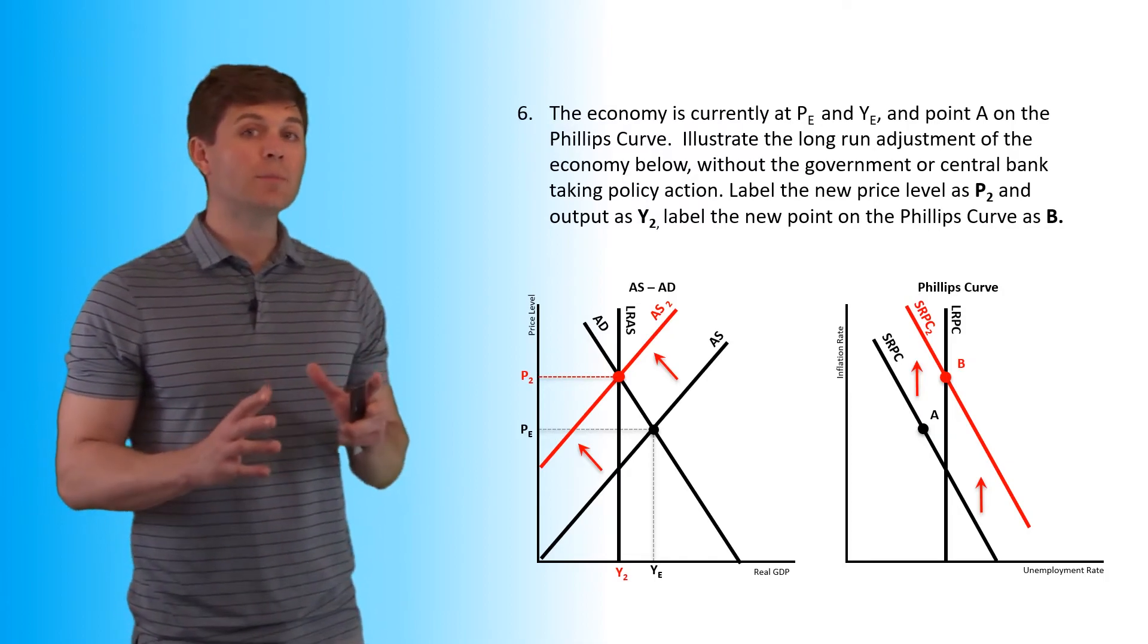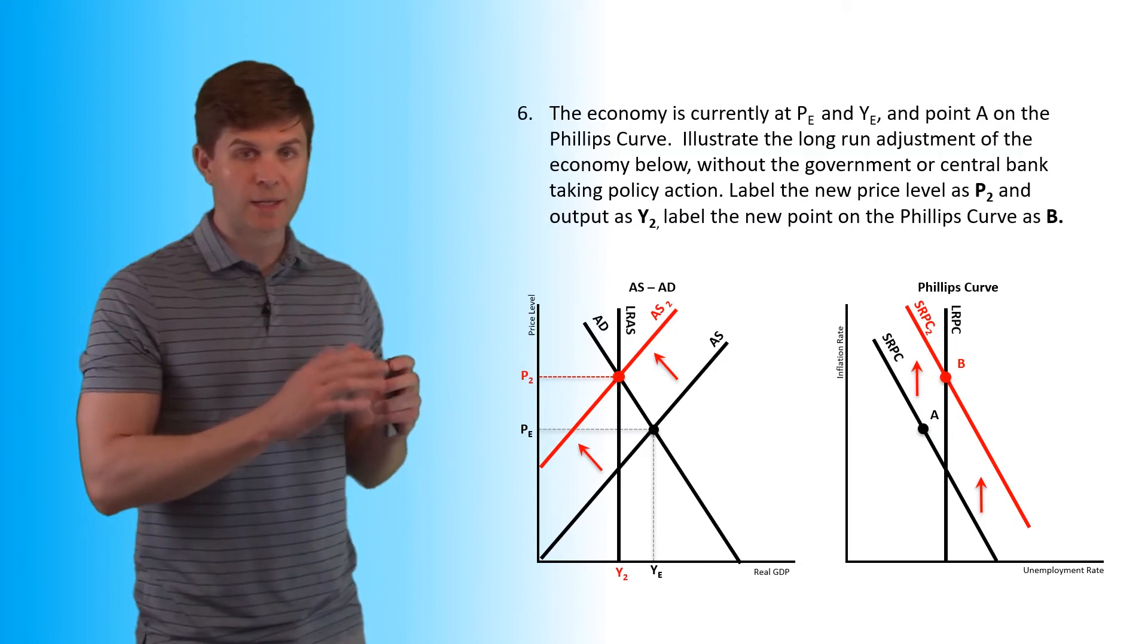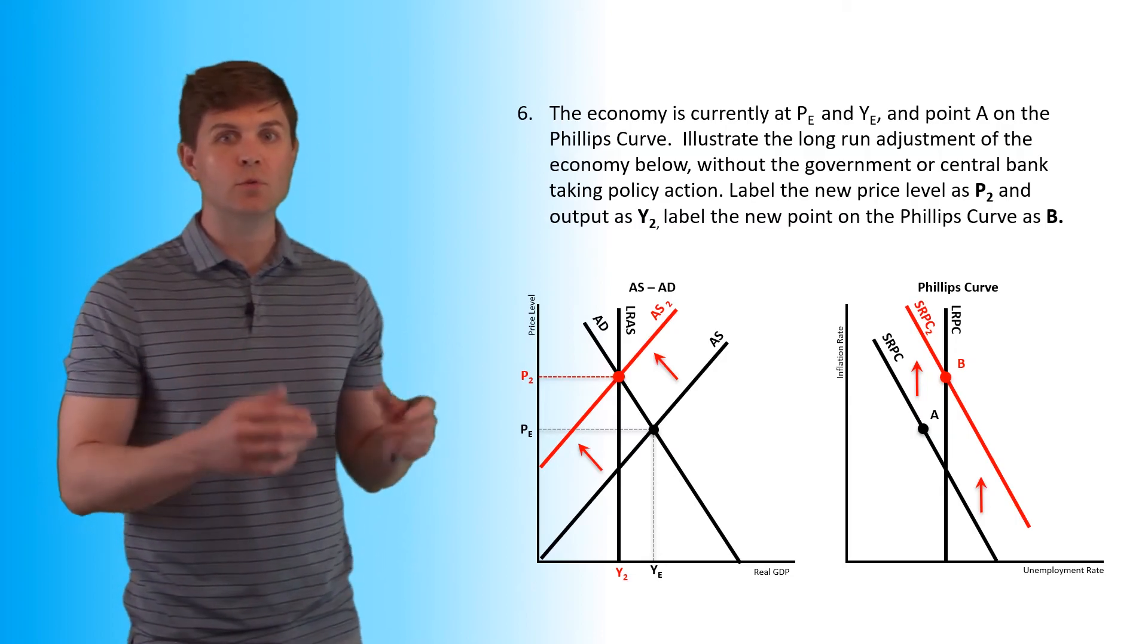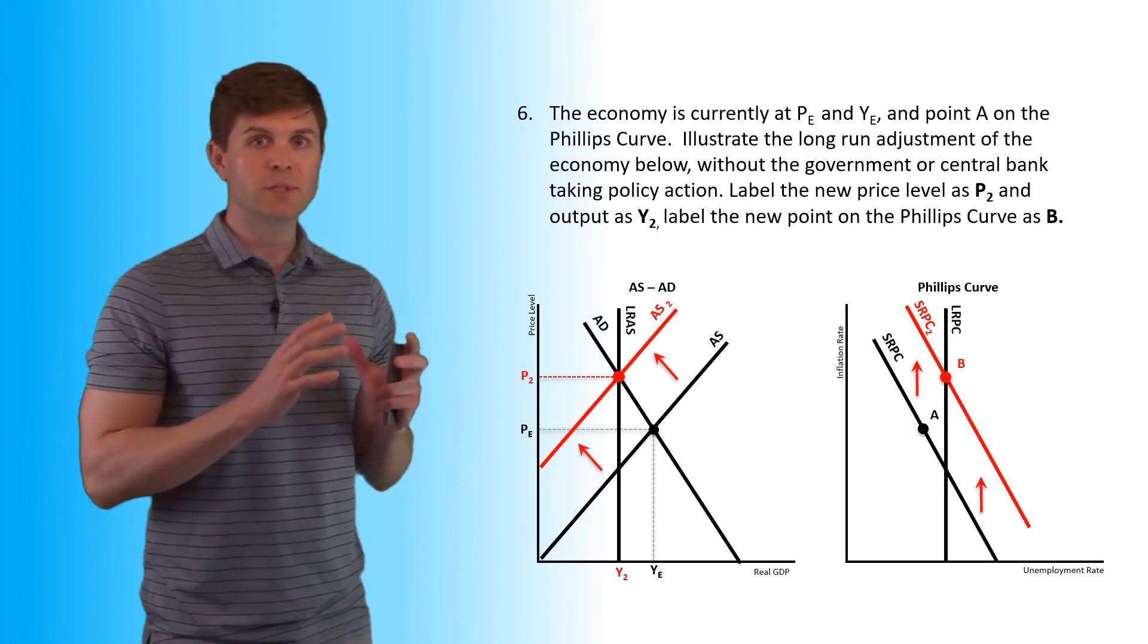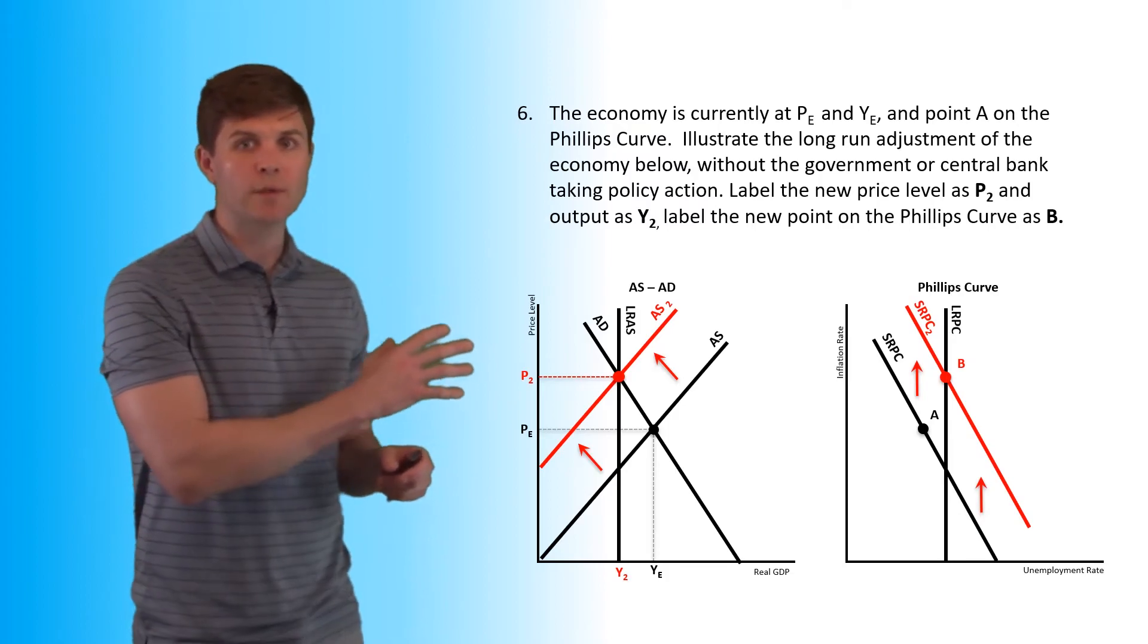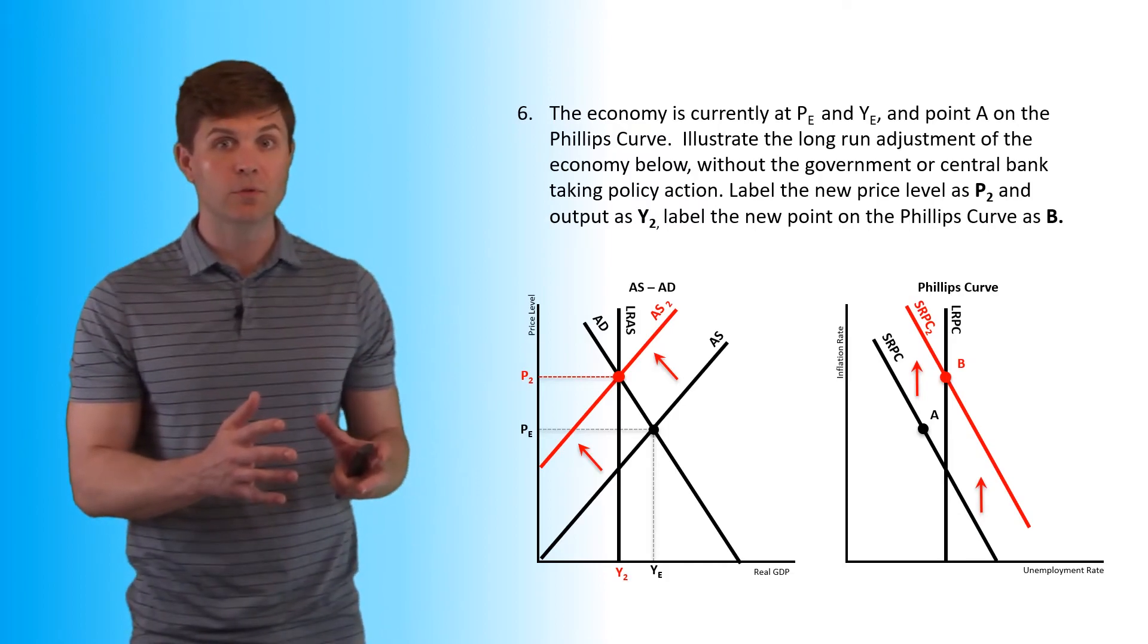So we're moving in this model from point A to point B. The FRQ questions sometimes ask you to label and show that change, whether it's point B or point Z as your new point, but make sure you're shifting it the right way based on what the aggregate supply and aggregate demand curves are doing.